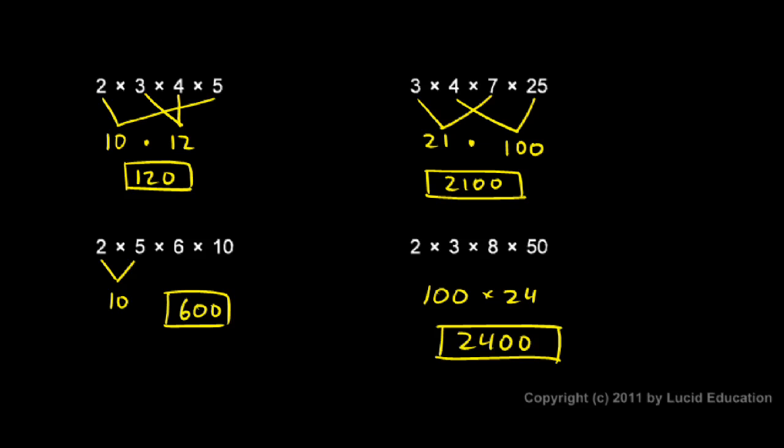So the point there again is look for groups of numbers that make sense. If the digits or the numbers are all multiplied together, sometimes they can be rearranged in a way that makes the problem substantially easier.